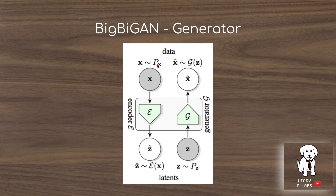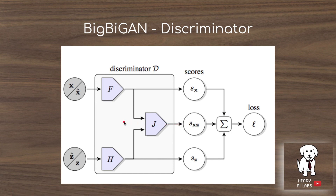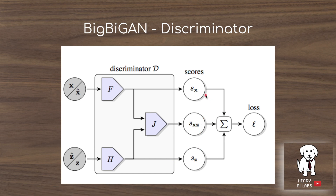The Z comes from a Gaussian prior, the generator produces images, and the encoder takes images and produces a latent code. An additional modification DeepMind makes to the BiGAN is separating the discriminator: F handles the image features and H is a multilayer perceptron. They produce unary scores — real or fake just for the image and just for the latent — giving both the joint distribution of X and Z, as well as scores for X and Z individually.